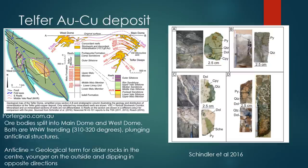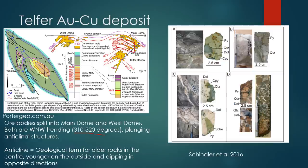Telfer is hosted not only within the Malu Formation, but in a particular structure called an anticline — essentially a folded unit where the oldest rocks are in the centre and the youngest rocks are outside. What we actually have at Telfer is two doubly plunging anticlines trending west-northwest at about 310 to 320 degrees. Within that anticline we host the mineralisation in the Malu Formation — specifically in these reefs, which are bedding-parallel mineralised layers — and at depth we get more discordant veins plus breccia and stockwork mineralisation.